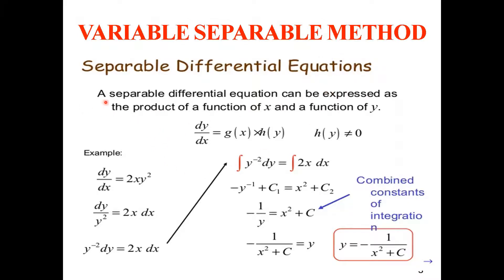A separable differential equation can be expressed as dy/dx = g(x)·h(y), where h(y) ≠ 0. We move y-terms to one side with dy and x-terms to the other side with dx. For example, dy/dx = 2xy² becomes dy/y² = 2x·dx, i.e., y⁻²·dy = 2x·dx, and then both sides can be integrated easily since the variables are now separated.